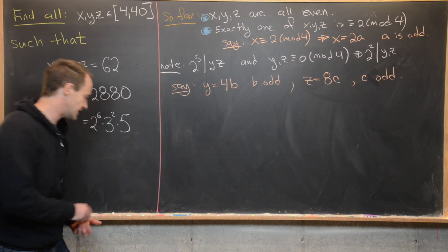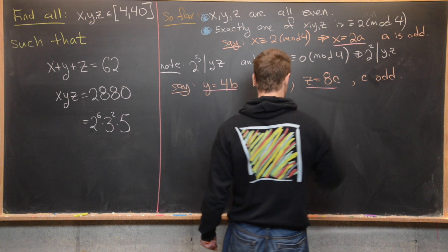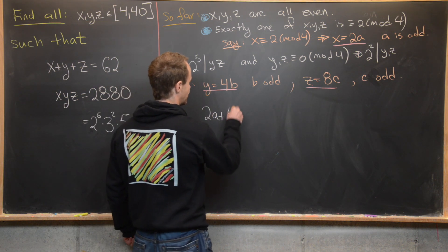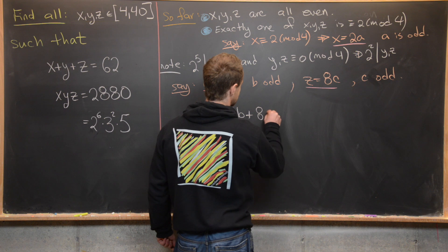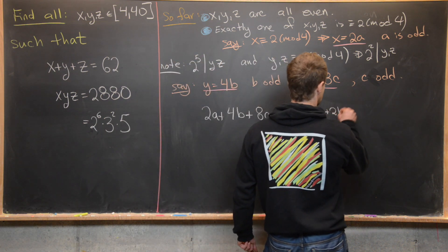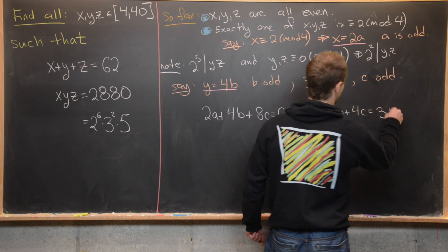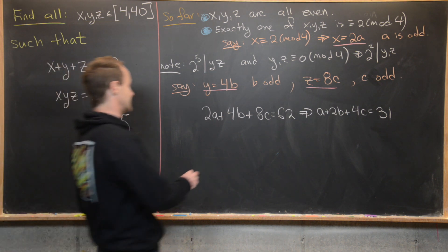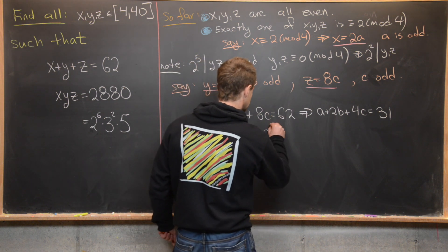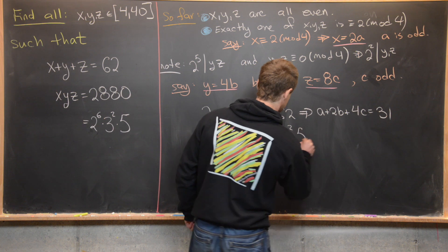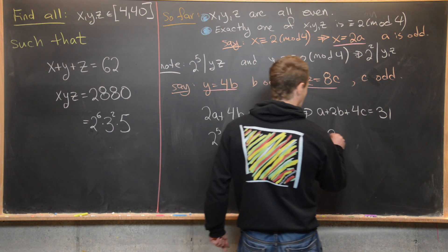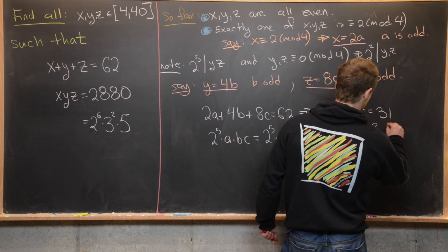Now we insert x equals 2a, y equals 4b, z equals 8c into our original equations. We get 2a plus 4b plus 8c equals 62, which simplifies to a plus 2b plus 4c equals 31. For the product equation, we get 2 to the 5th times abc equals 2 to the 5th times 3 squared times 5, so abc equals 45.